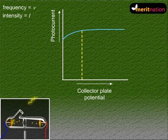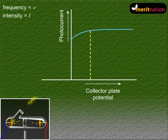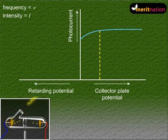Now just imagine what will happen if we instead apply a negative or a retarding potential to the collector plate with respect to the emitter plate. That is, we make it increasingly negative gradually.